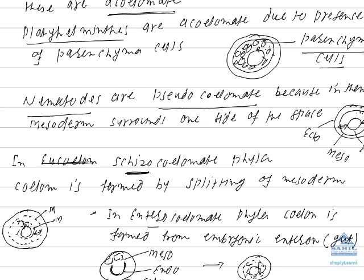Next group of truly coelomate animals is called enterocoelomate. Entero means it develops from enteron. And enteron refers to gut. The gut of embryo is called enteron. This is enteron. Enteron is formed of endoderm. Enteron below and mesoderm on upper side.